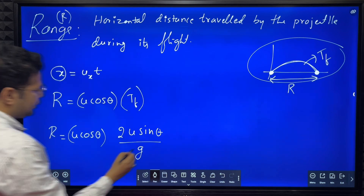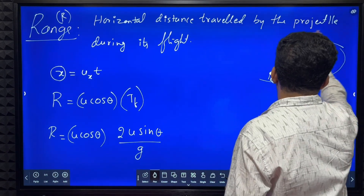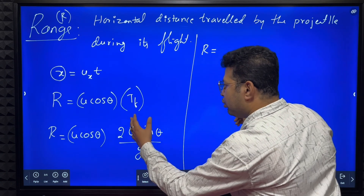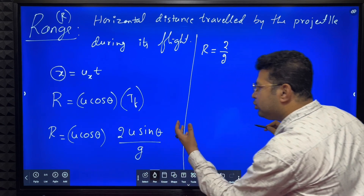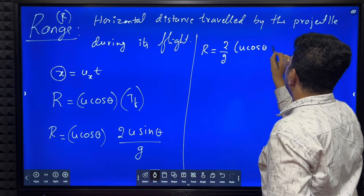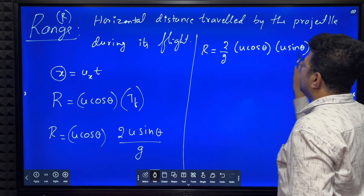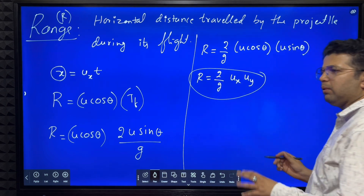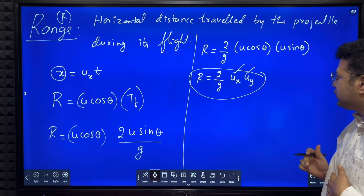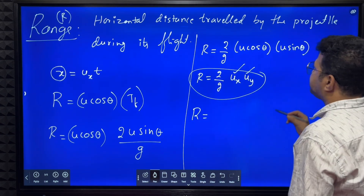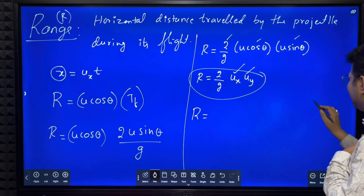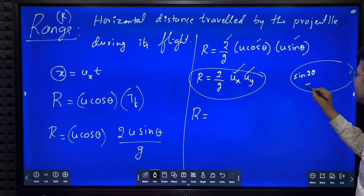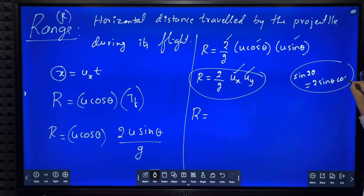Rearranging: R = (2/g) * u cos theta * u sine theta = (2/g) * Ux * Uy. If only horizontal and vertical components of velocity are given, you can use that form. Otherwise, using the trigonometric identity 2 sine theta cos theta = sine 2 theta, we replace 2 sine theta cos theta with sine 2 theta and combine u * u as u². So: R = u² * sine 2 theta / g. This is the equation for range of a projectile.